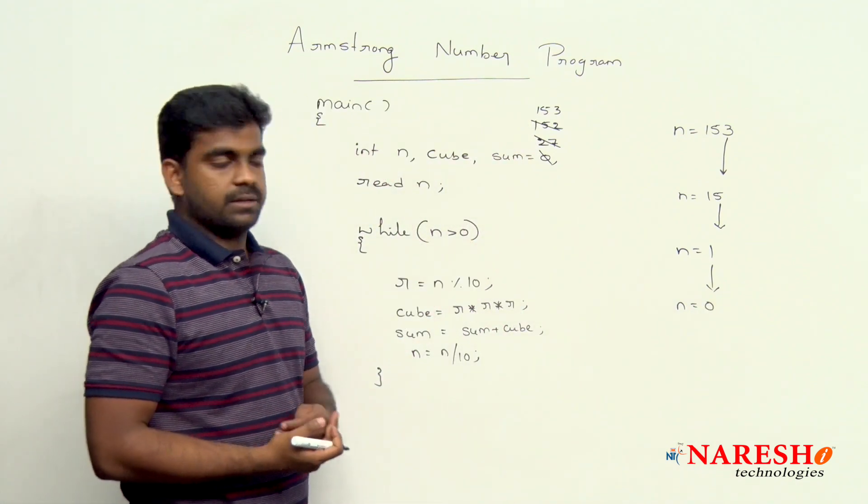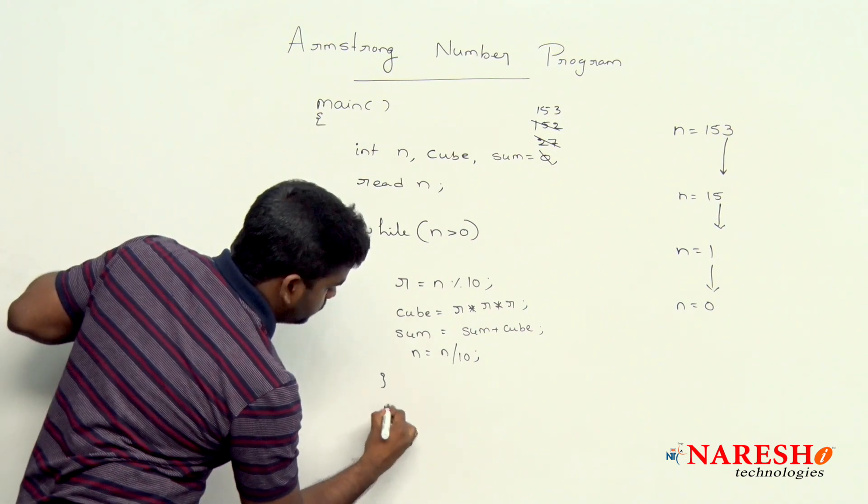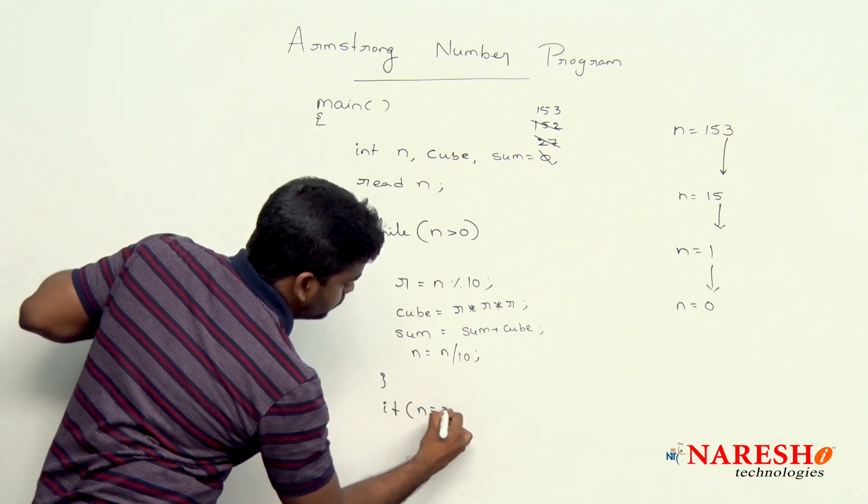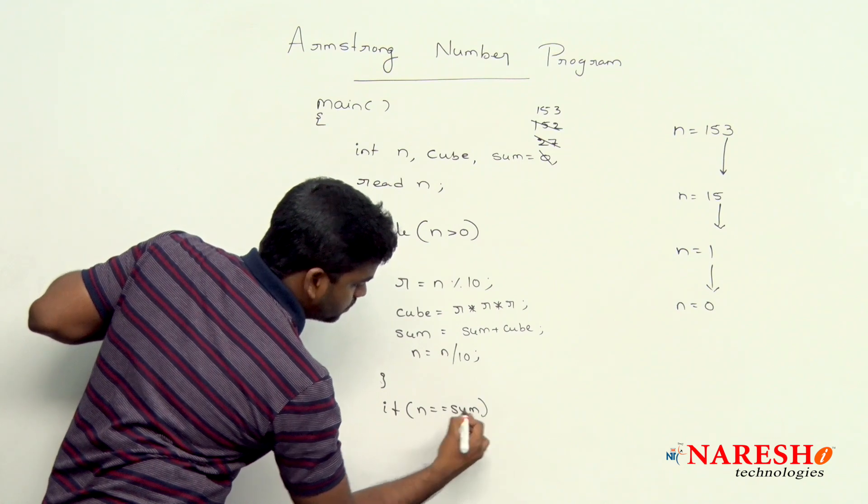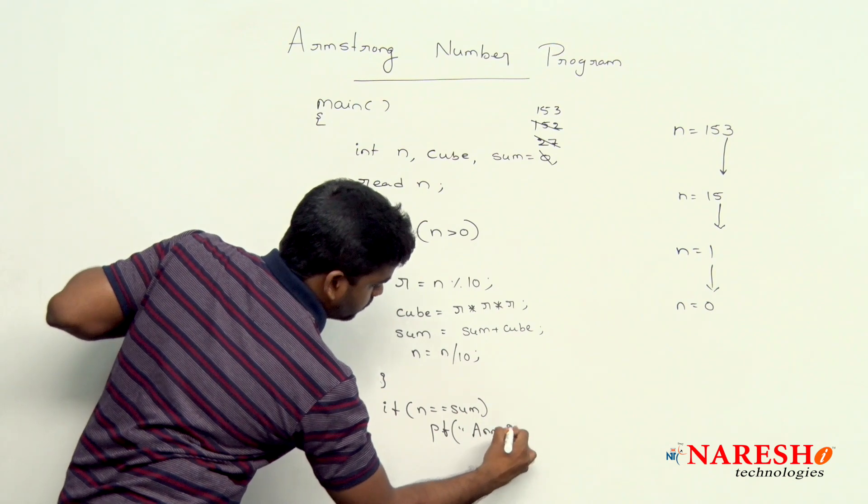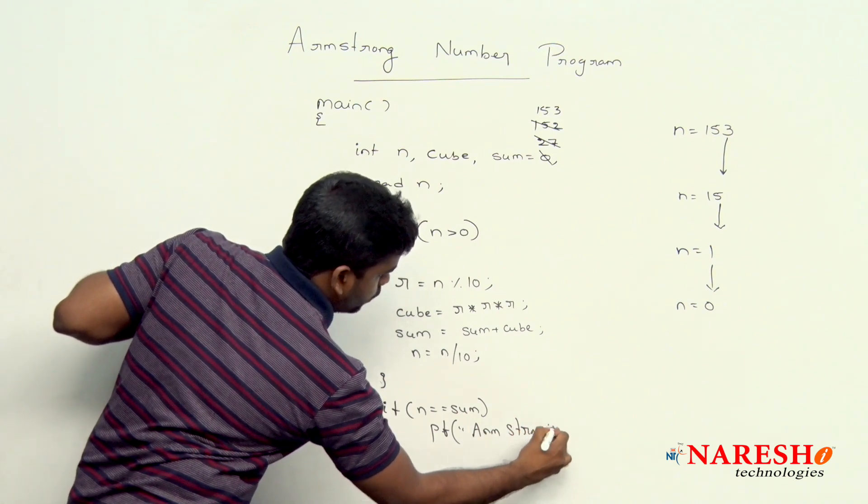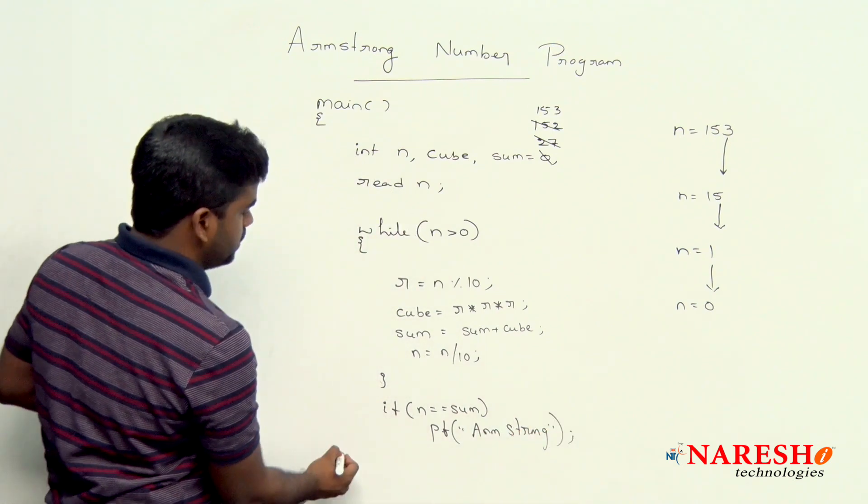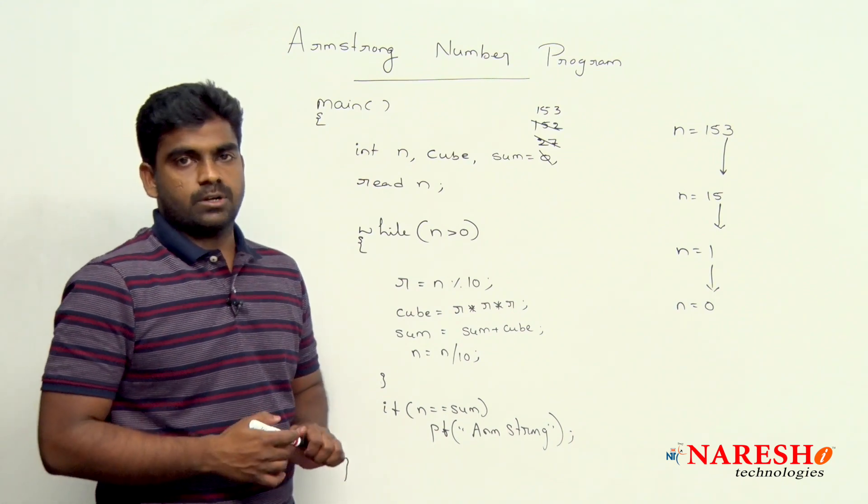Now, we are checking if n value and sum value both are same, then we can say printf it is an Armstrong number, else it is not an Armstrong number.